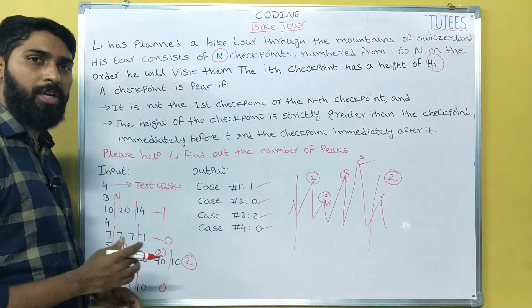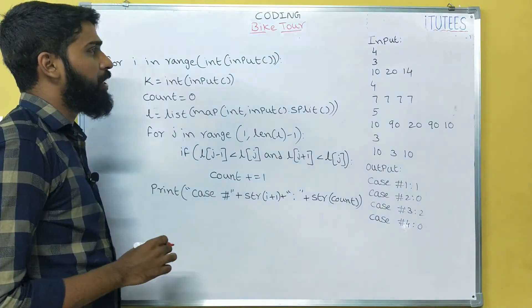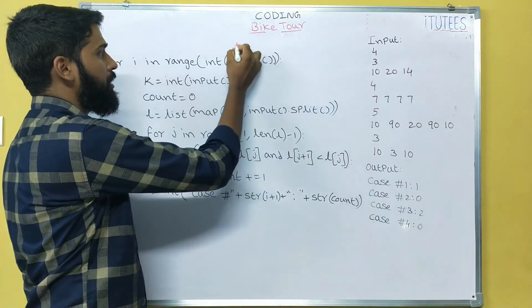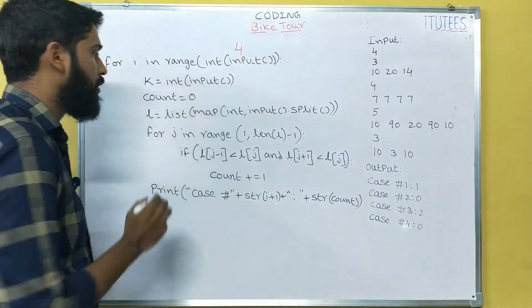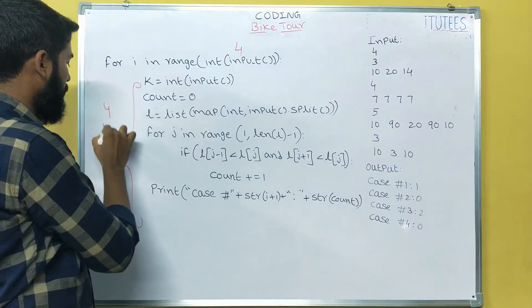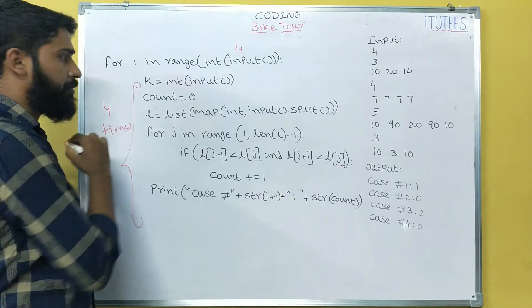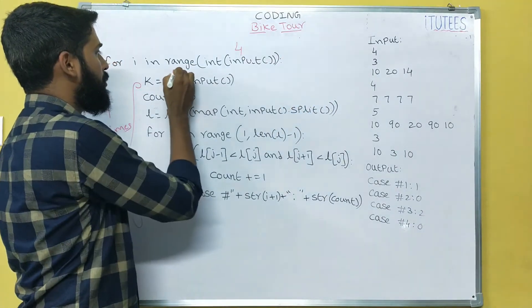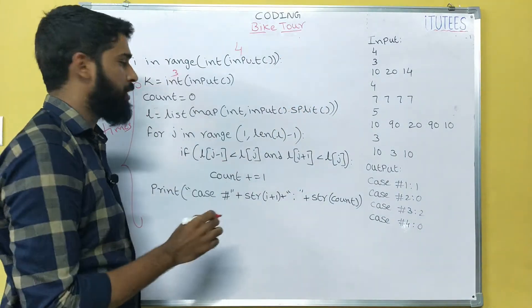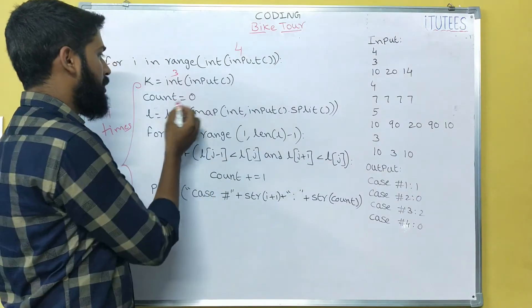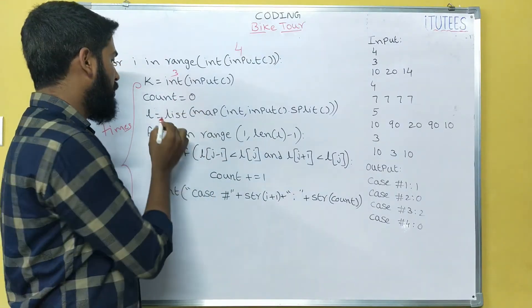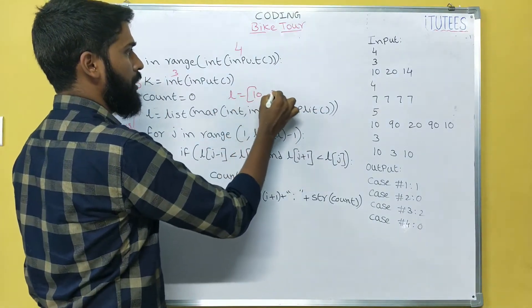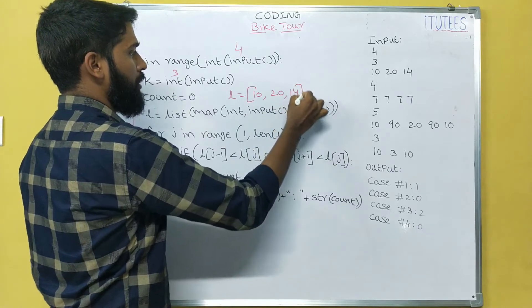Now we are going to see the program. For i in range of int(input()) — this handles the number of test cases, which is 4, so we execute these instructions 4 times. K equals int(input()), so the K value equals 3, meaning 3 mountains. Count is initially 0. L is the list of heights — for example L equals [10, 20, 40].